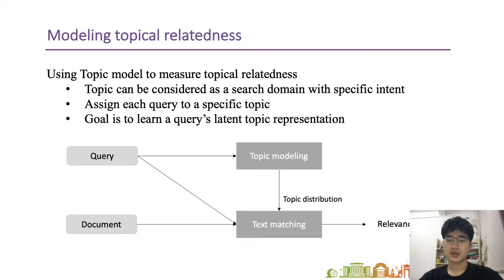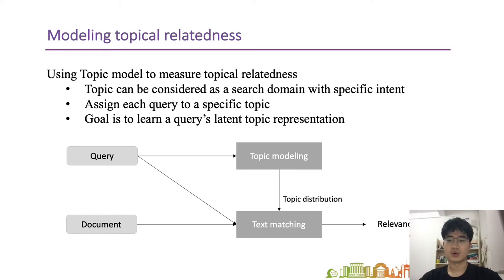Therefore, we attempt to use a topic model to measure topical relatedness. Topic information in retrieval can be considered as a search domain with a specific intent. In particular, we build topic embeddings for the query instead of the document. The main idea is to augment the topic representation power of the query, and use the generated topic embeddings to match the topical relevance information in the document.